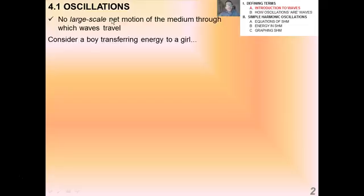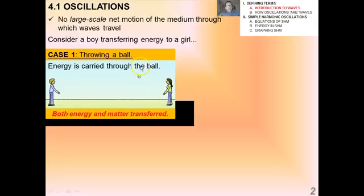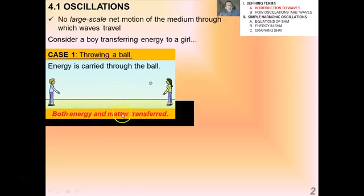Another important thing about waves is that there's no large-scale net motion of the medium through which they travel. Consider a boy throwing a baseball to a girl — clearly, energy is carried through the ball. That energy comes initially from the chemical potential energy inside the boy, from food he'd eaten, to impart kinetic energy to the ball. In this case, both energy and matter are transferred — the boy actually gives the girl the material, the actual atoms and molecules in the baseball.